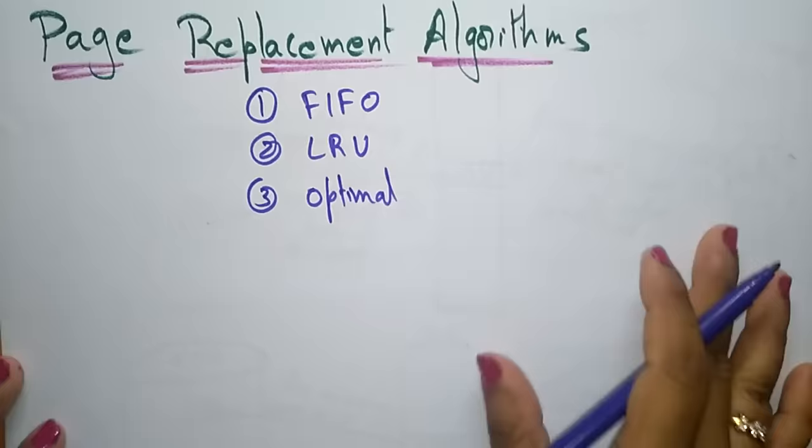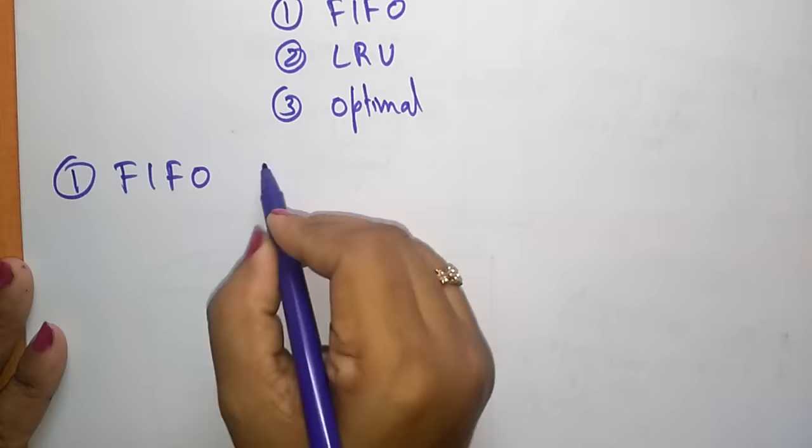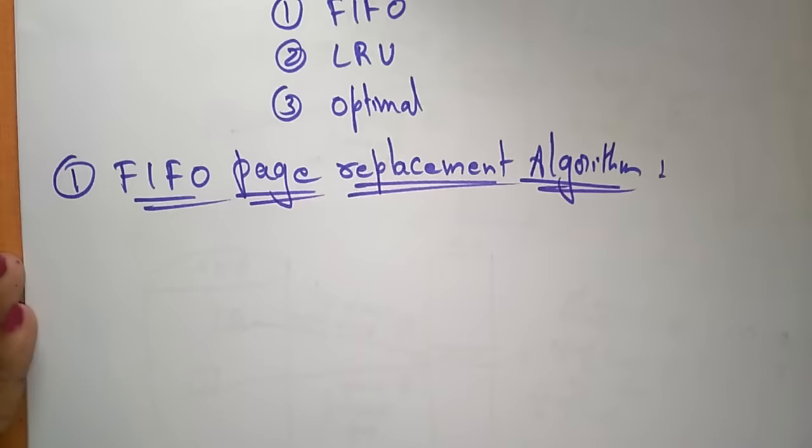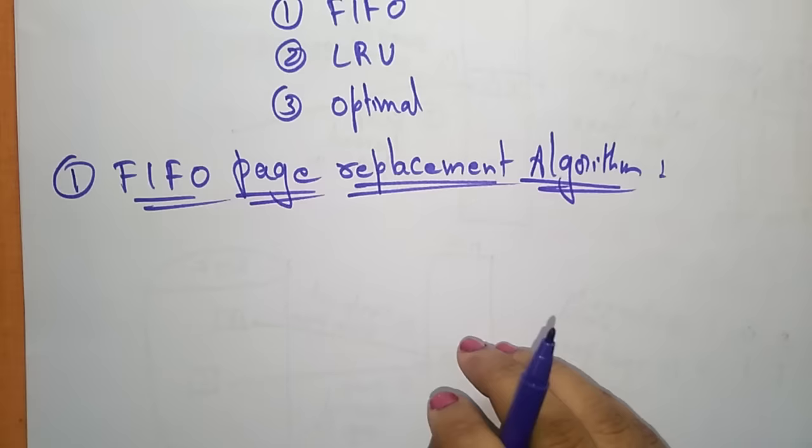Now let us see the first page replacement algorithm: First In First Out (FIFO). The name itself says it — whatever page we enter first, that page has to be deleted first. It is very easy to implement. The FIFO page replacement algorithm selects the page for replacement that has been in memory for the longest time.